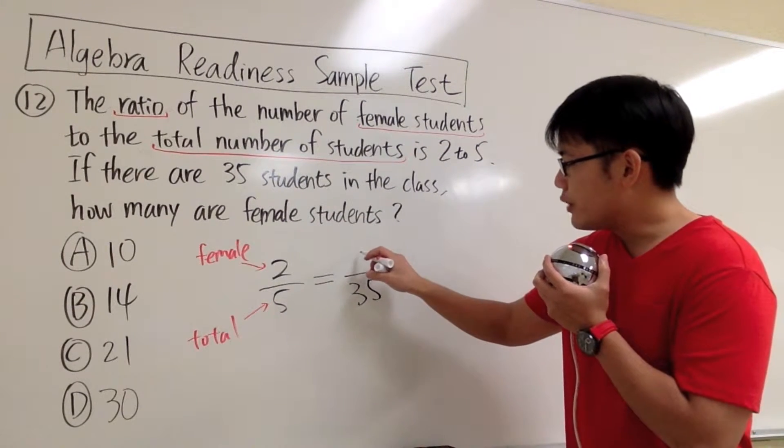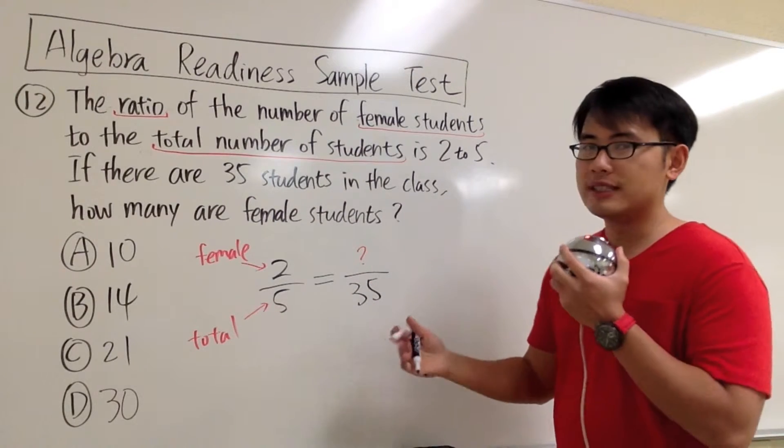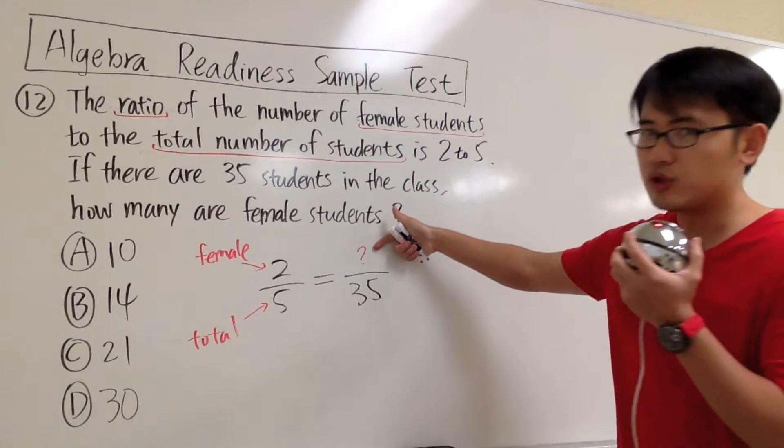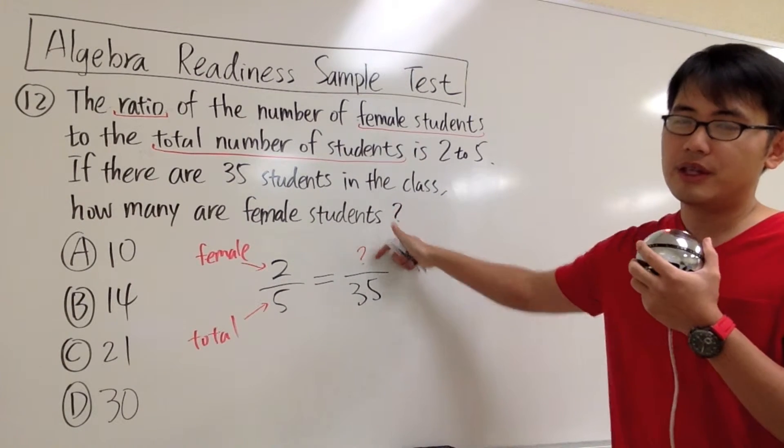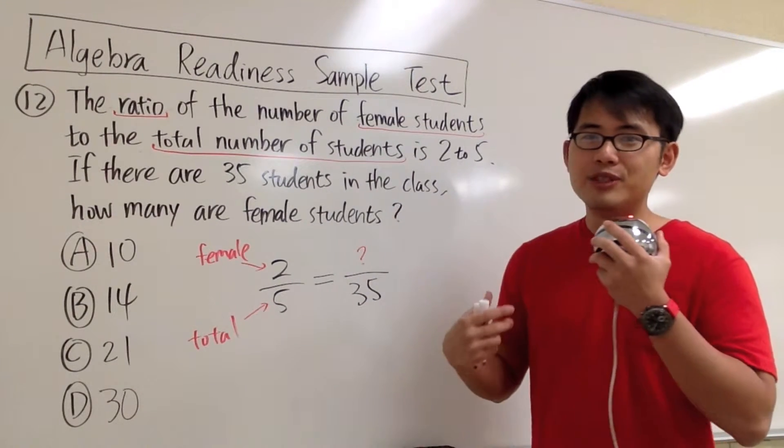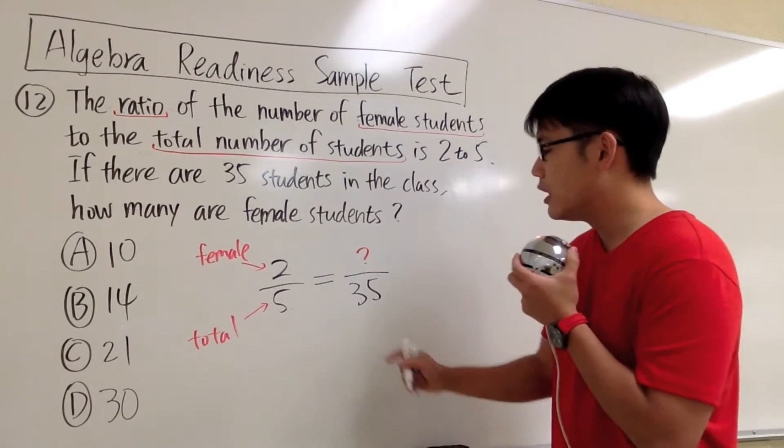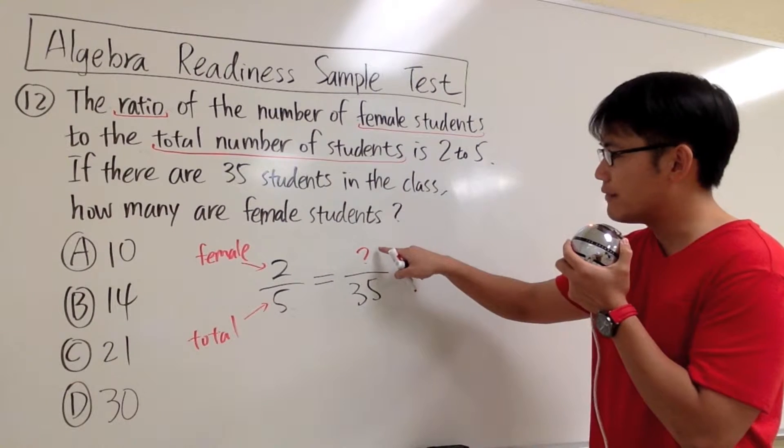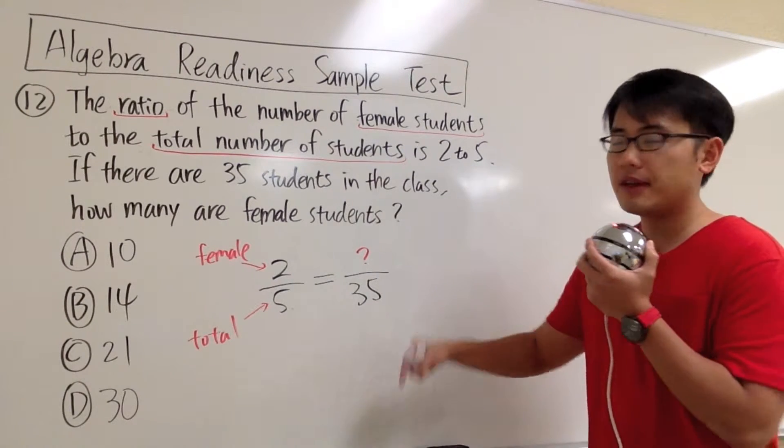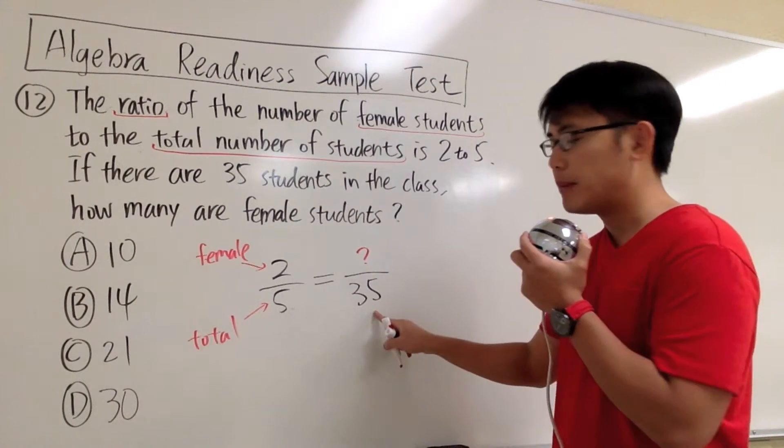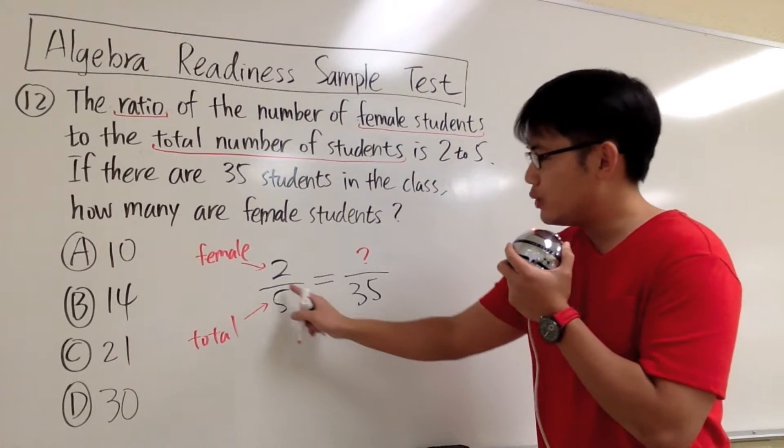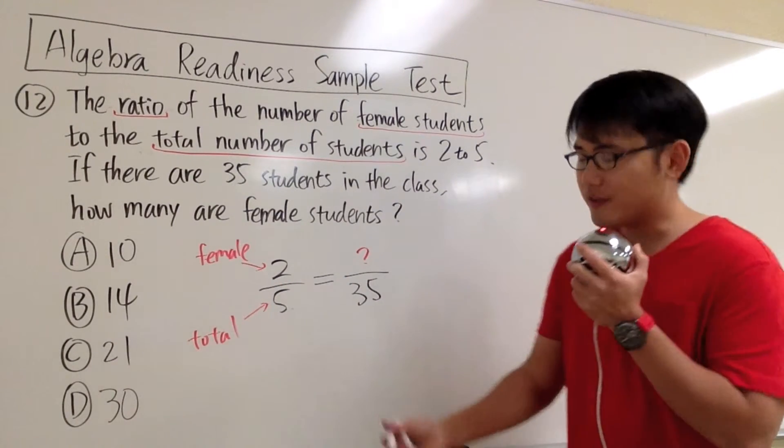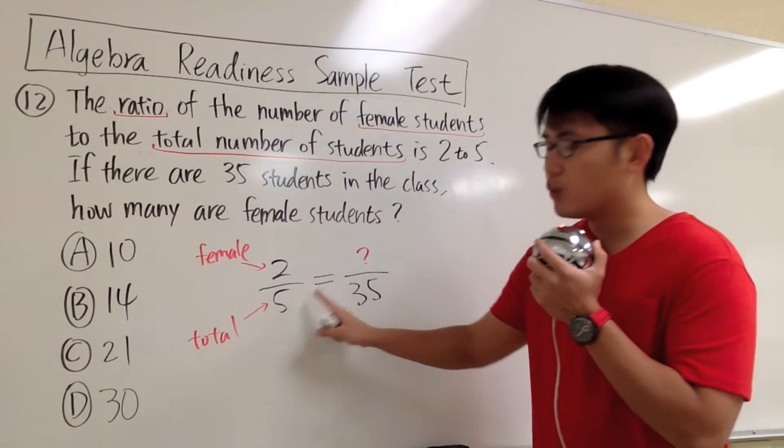For the numerator, that's how many female students we're trying to find out. Now we can look at this equation and figure out what the question mark will be, and that will be the answer. We have 2 ways to do it. Let me show you a more natural way first. We see we have 2 over 5 on the left-hand side, and question mark over 35 on the right. We'll focus on the denominators. Originally we have 5, and now we have 35. We have to ask ourselves, 5 times what will give us 35?